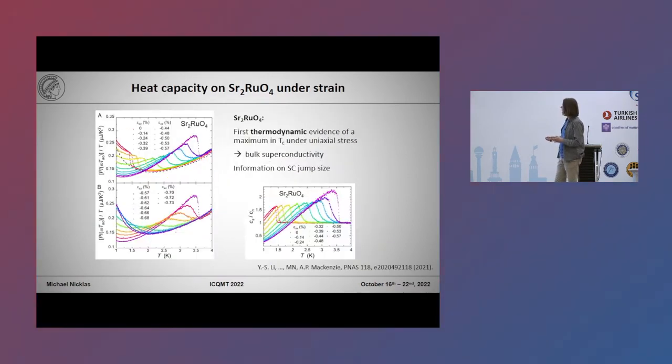And that is what we observe. We can really follow the transition so we have thermodynamic evidence that TC is maximum under uniaxial strain, it's bulk superconductivity. And even though that's only relative data we can say something about the jump in the heat capacity because that's basically at the same temperature. And we see that the jump size is increasing with increasing strain and it's getting the maximum value at the Van Hove singularity. And that's also basically excluding to some extent that there is a node in the 1,0,0 direction.